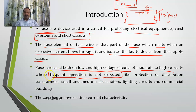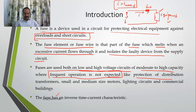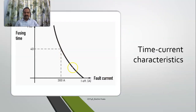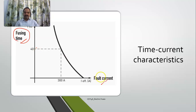Fuses are used where frequent operations are not expected, in applications like protection of transformers, motors, lighting circuits, and commercial buildings. Moreover, a fuse has an inverse time characteristic. In this characteristic, the x-axis is the fault current and the y-axis is the time of operation. If the fault current is low, it may take a longer time, but if the fault current is high, the fuse will act immediately.